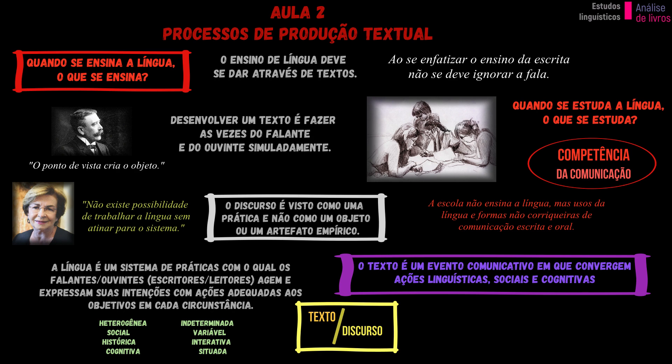O texto seria a materialização do discurso, mas para esse texto chegar até alguém é necessário haver um gênero — um modelo correspondente a formas sociais reconhecíveis nas situações de comunicação em que ocorrem. A estabilidade desses modelos é relativa ao momento histórico social. Como exemplos de gêneros temos: bilhetes, cartas, e-mail, conversas, seminários, teses, resenhas, resumos. Eles são flexíveis, de acordo com o momento histórico no qual circulam.